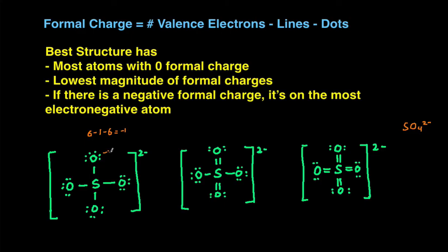So I will start by just labeling that this oxygen has a formal charge of negative one, which means that all these other oxygens also have a formal charge of negative one, because they all look exactly like the oxygen up here. And then for the sulfur, sulfur has six valence electrons as well, minus the number of lines around it, which is four, and then it has no lone electrons around it, giving us a formal charge of positive two.